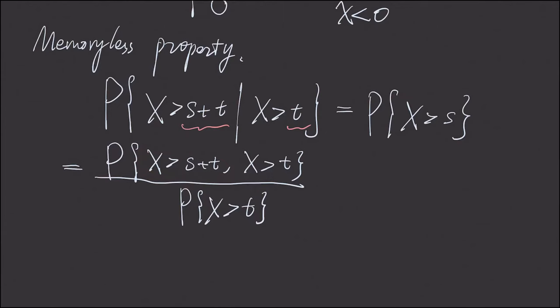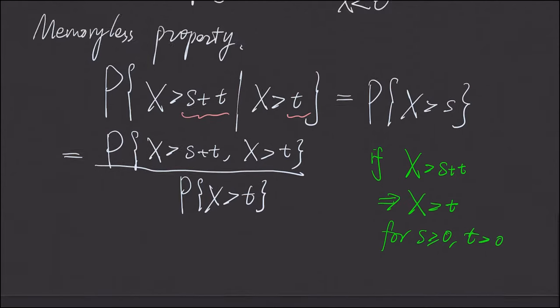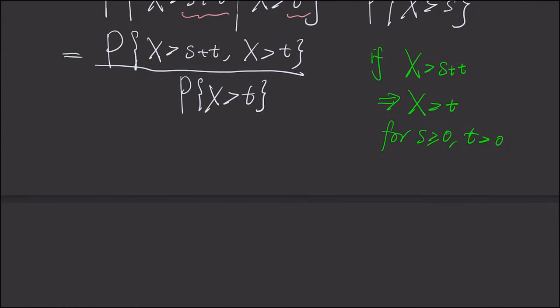If we notice the numerator, if X is greater than s plus t, then X is greater than t. This is given for s and t, where s is greater than 0 and t is greater than 0. As a result, the top is nothing but X is greater than s plus t.